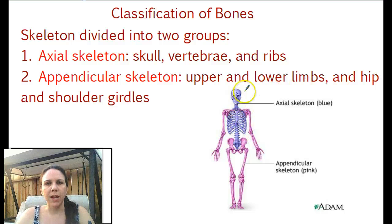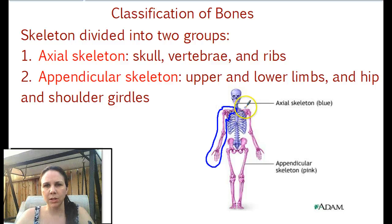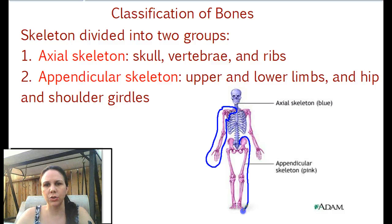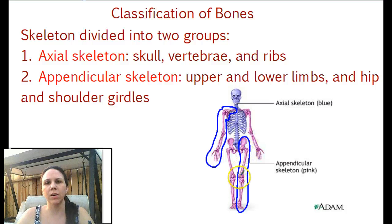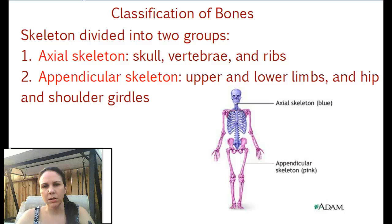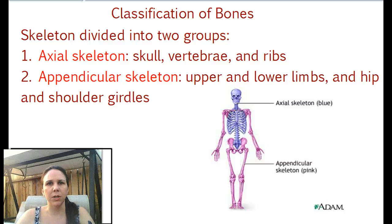Then we have your appendicular skeleton, which includes the things that hold your arms on and the arms themselves — so that's the clavicle, scapula, and the arms. Same thing with the legs: it includes your legs and all the hips and things that hold them on as well. They've got it color coded in here, which makes it pretty easy.